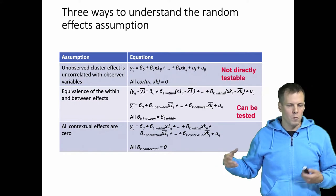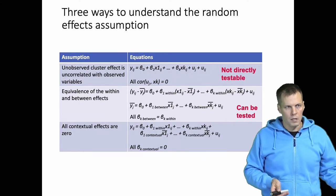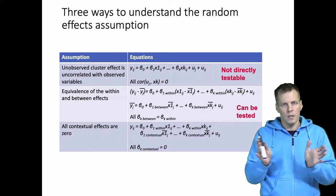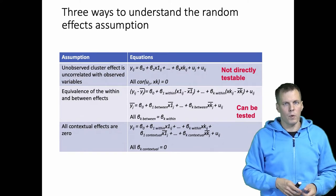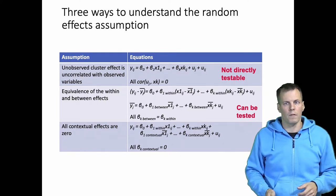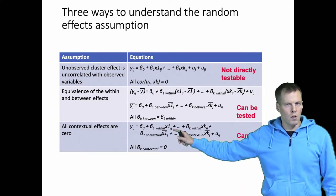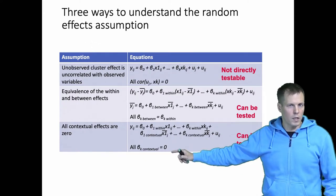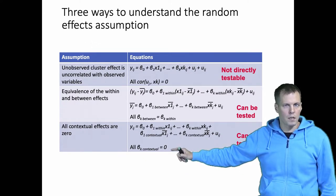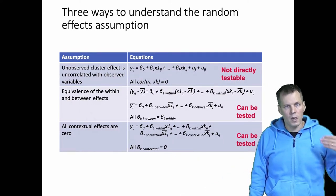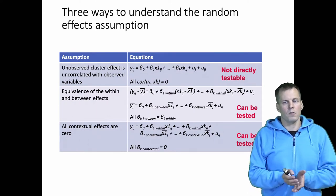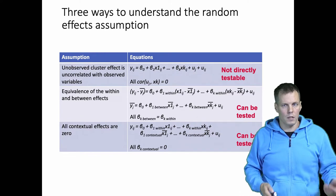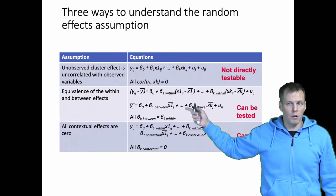This third understanding is something you could argue from theory. For example, you could say that when thinking about team members and the effect of gender, gender affects individual performance but the gender distribution within a team doesn't affect the individual. So gender has only a within effect but no contextual effects. This can be tested: you specify a regression model with the original predictors and then also include the cluster means of the predictors. The assumption is that all regression coefficients for the cluster means are zero, which can be tested for individual variables using a t-test or z-test under maximum likelihood, or for all simultaneously using a Wald test — giving us something directly testable.